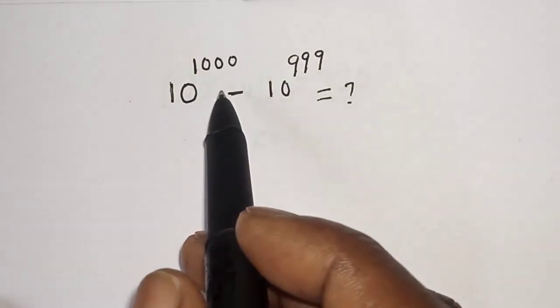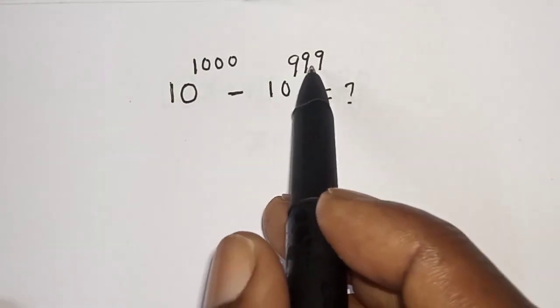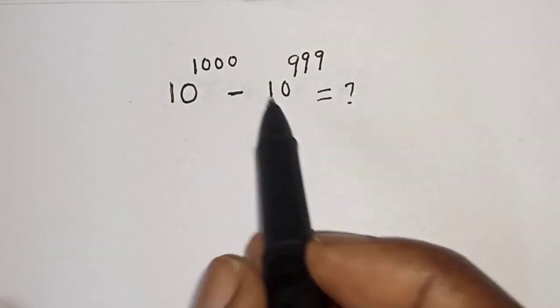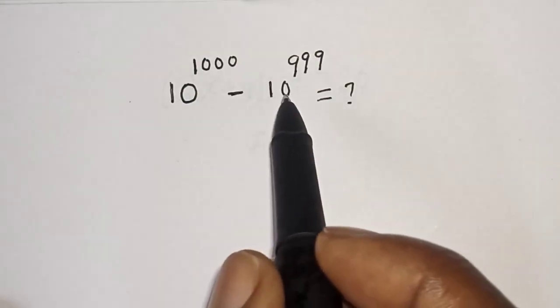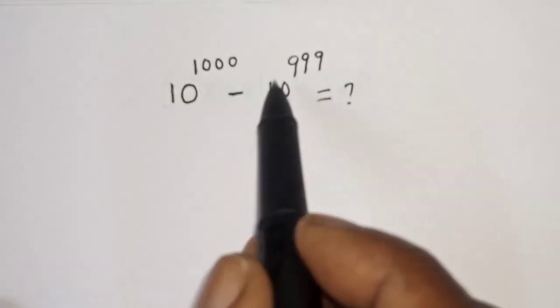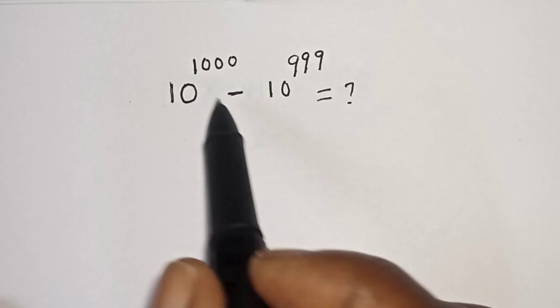10 raised to power 1000 minus 10 raised to power 999 is equal to what? Hi everyone, welcome to my class. In this class, we want to simplify this nice problem.